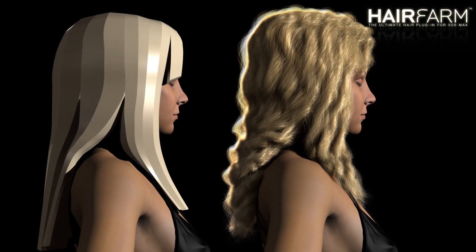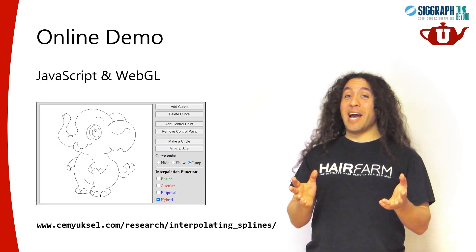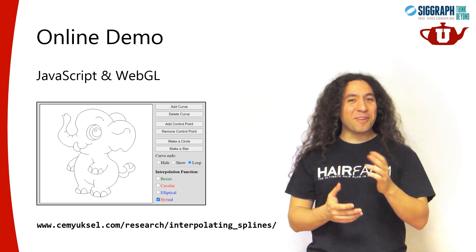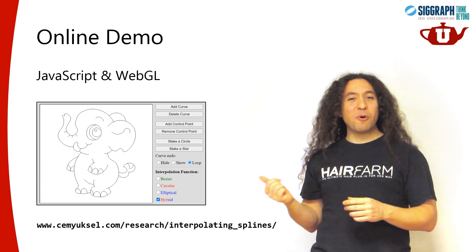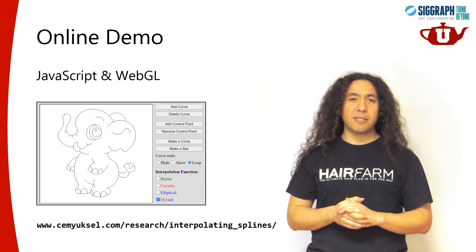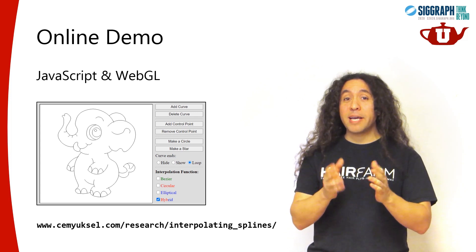I promised you 3D curves, and here they are. In this case, both the hair mesh and the final hair model use our curves with the hybrid interpolation function. If you would like to play with these curves, you can totally do so — just go to this link and click on Demo. This demo uses JavaScript and WebGL, so it should work on any modern browser on any operating system. It also includes source code if you'd like to see it, and all of the 2D examples in the paper.